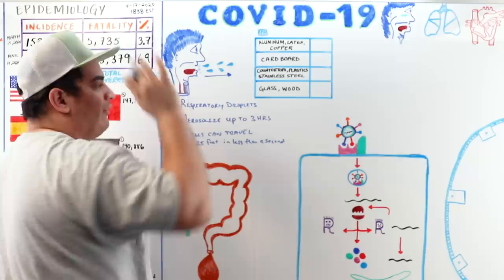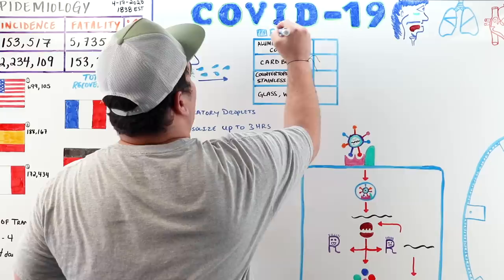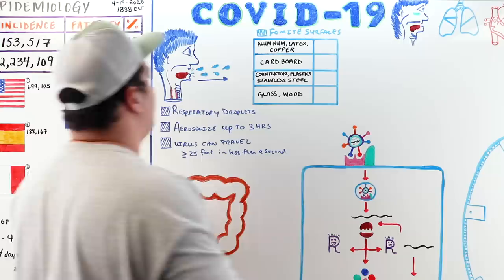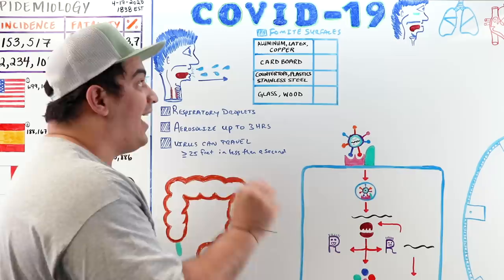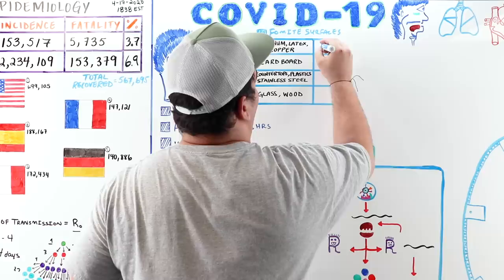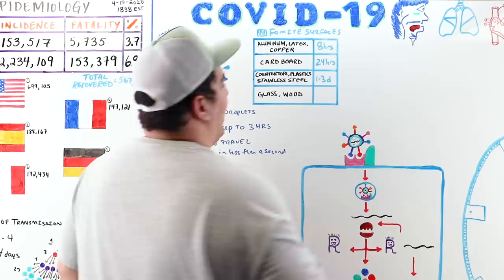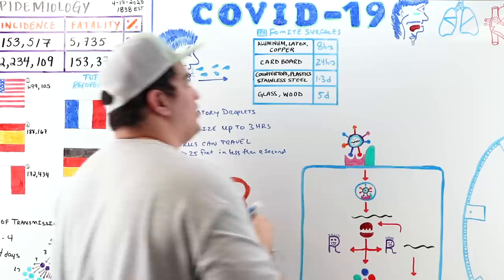Respiratory droplets can land on fomite surfaces and remain infectious for varying durations: up to 8 hours on aluminum, latex, and copper; 24 hours on cardboard; 1–3 days on countertops, plastic, and stainless steel; and up to 5 days on glass and wood. This highlights the importance of regularly cleaning surfaces.